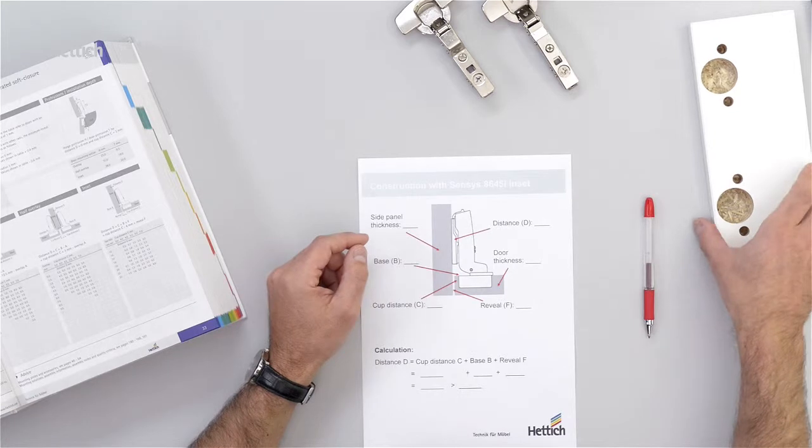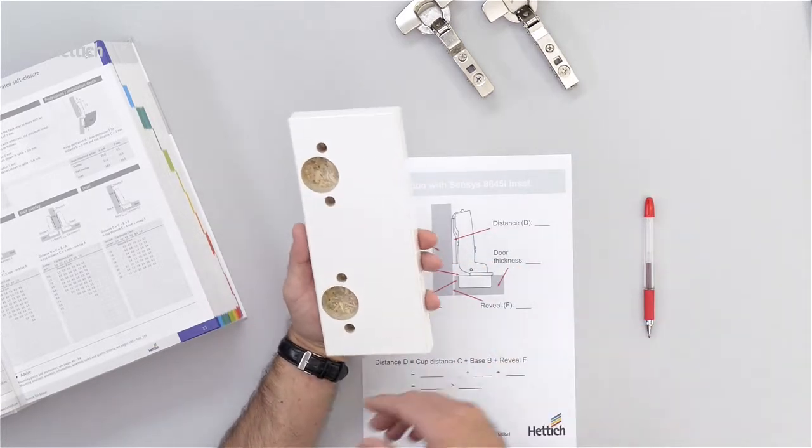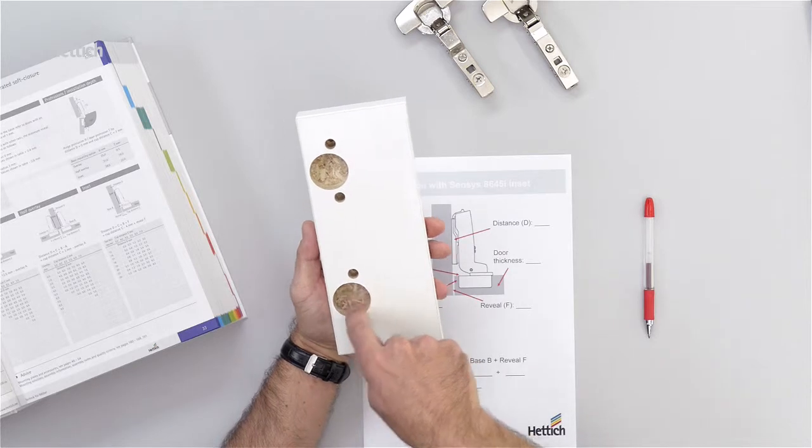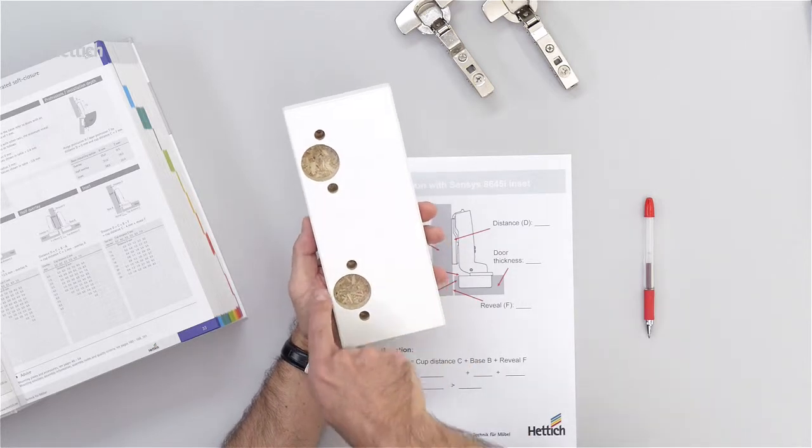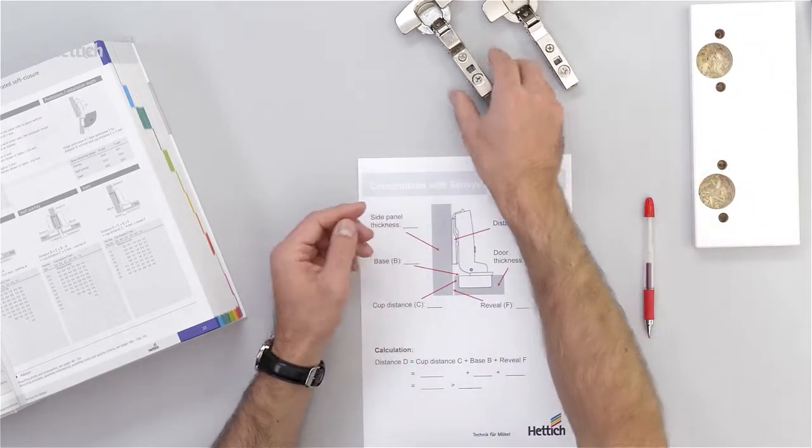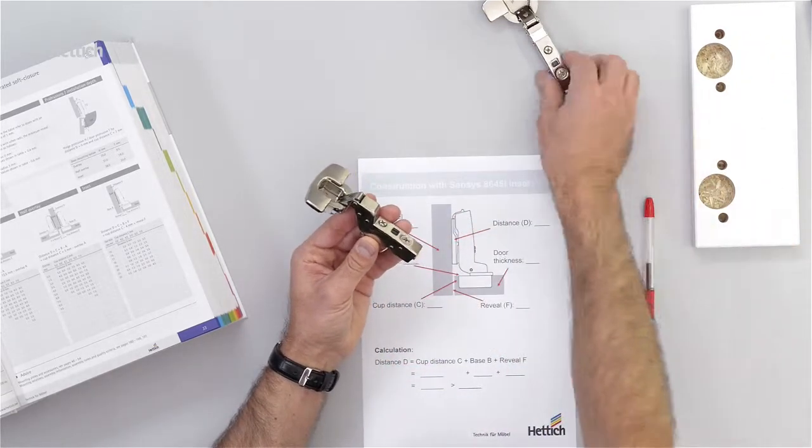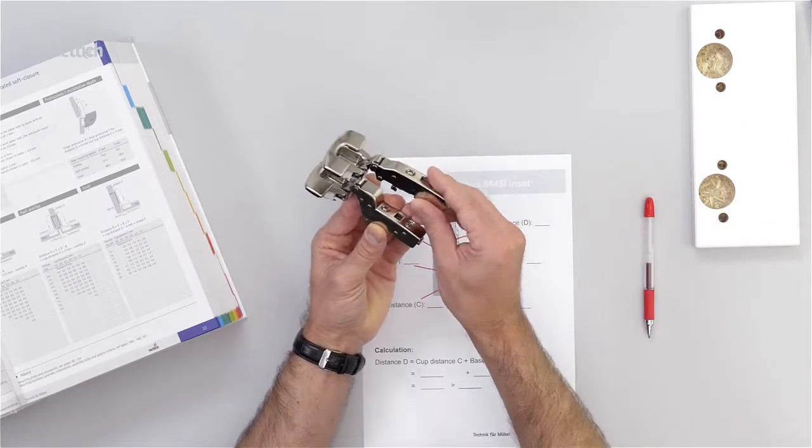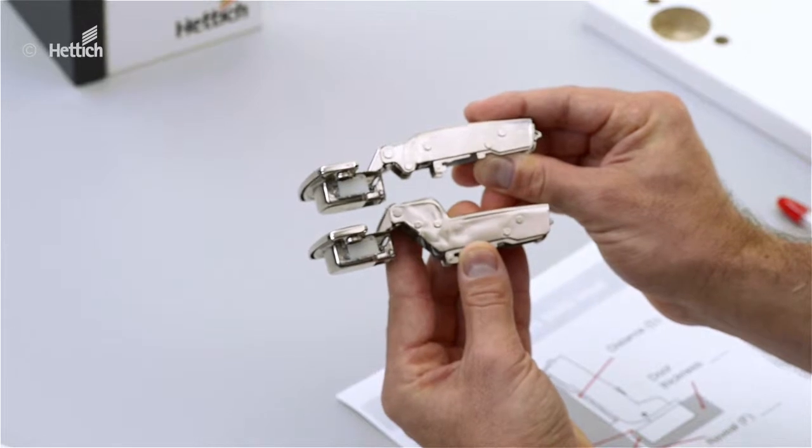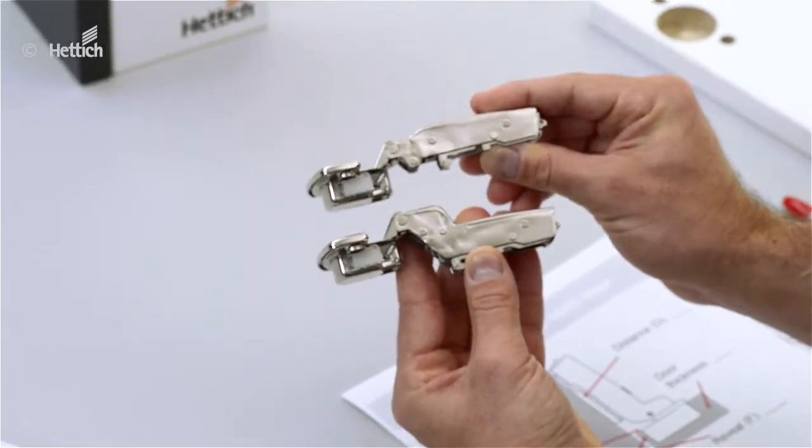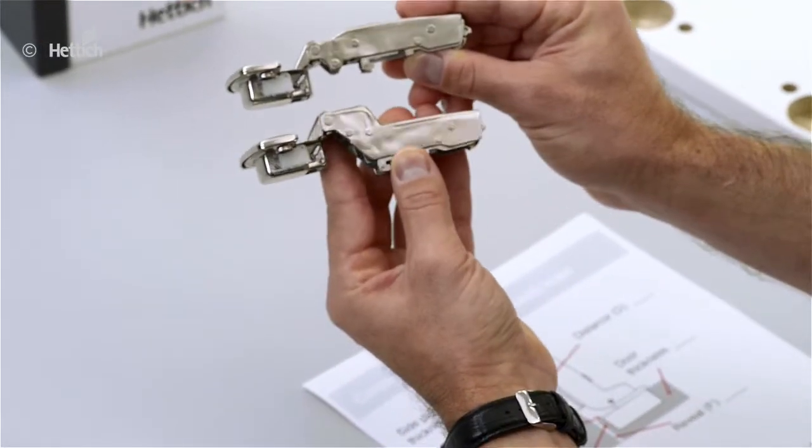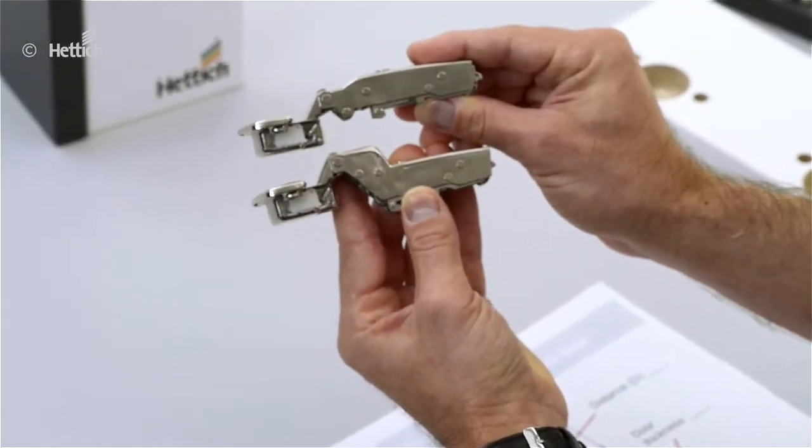The values show the cup distance C which is the distance between the cup hole drilling and the edge of the door, and also the base B which is the value for the different shape of the hinge arm. You can see here a full overlay hinge and an inset hinge with clear difference.